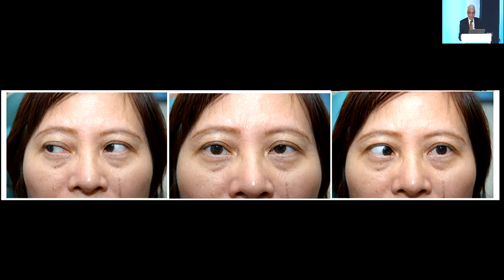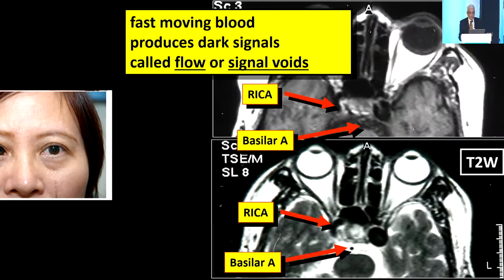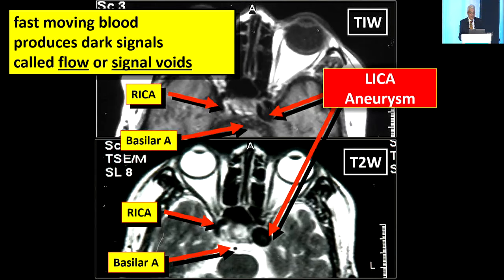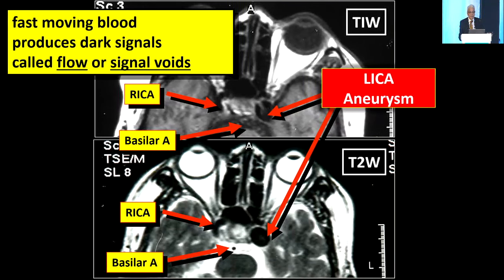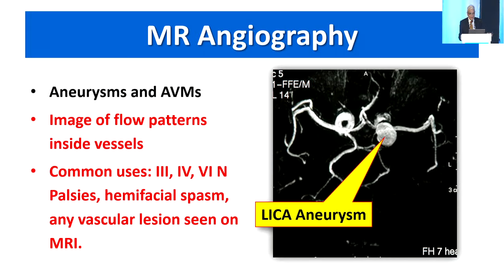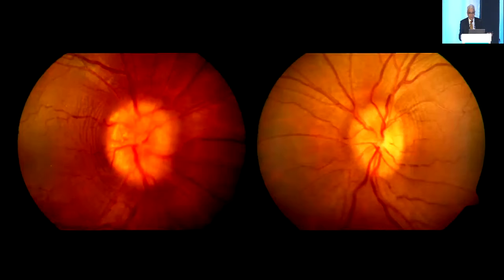This is a patient with a 6th nerve palsy, and you can see she has an aneurysm. So in all cranial nerve palsies you need to do an MR angiogram as well. This shows a giant intra-cavernous carotid aneurysm. For all cranial nerve palsies, hemifacial spasms, and any vascular lesions, don't forget to do this.